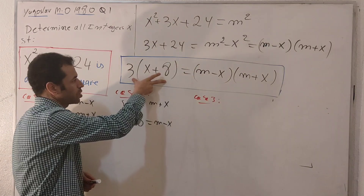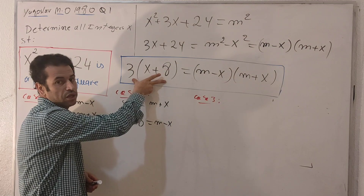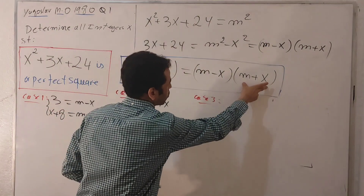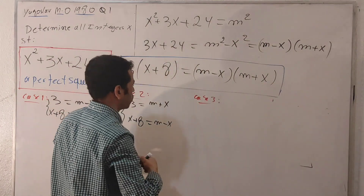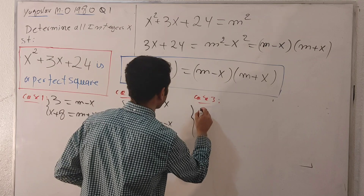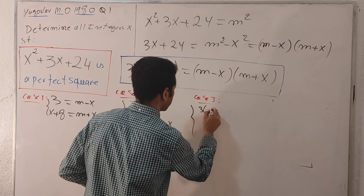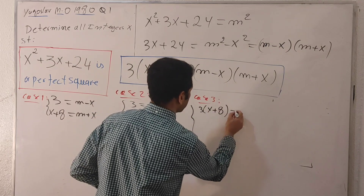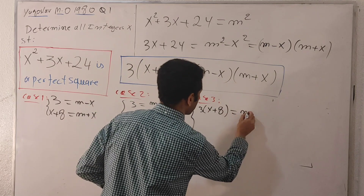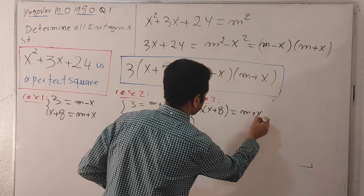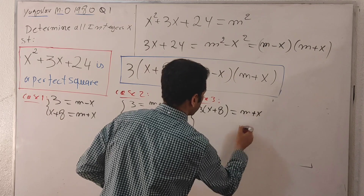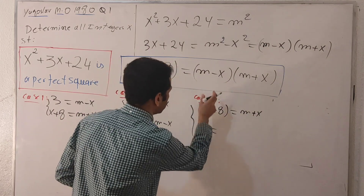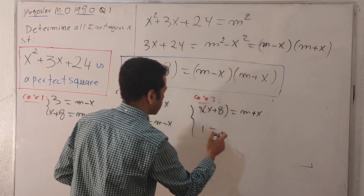For case number three, the entire left-hand side takes only the term (m plus x). So we have 3(x + 8) = (m plus x), which means 1 takes the term (m minus x), giving us 1 = (m minus x).